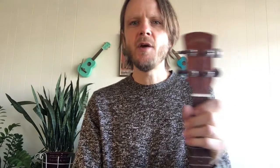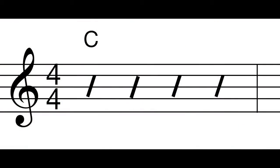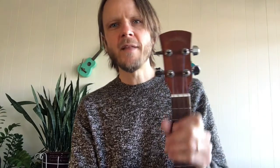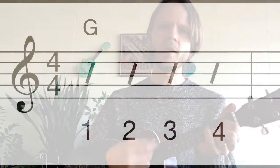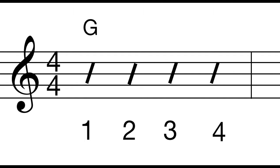For strum patterns — let's say we have a measure of four-four time but instead of single notes we just want to strum. Instead of writing notes, we write little slash marks, and you'll see this a lot with ukulele and guitar music. Above the staff we write the letter of the chord we're playing — a big G for a G chord, a C for a C chord. It tells you what chord to play for that measure. So four strums on G: one, two, three, four.